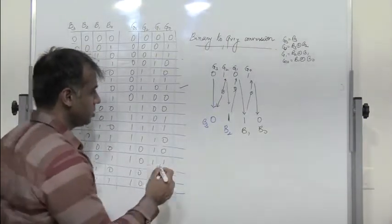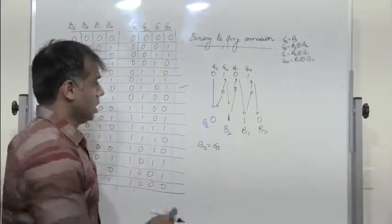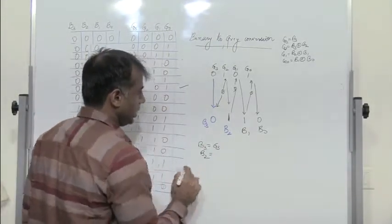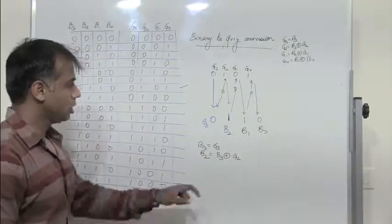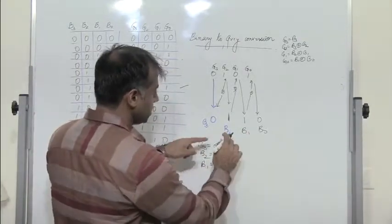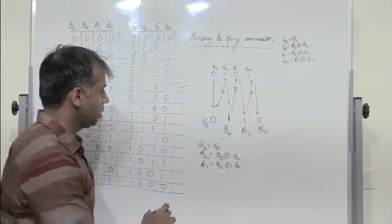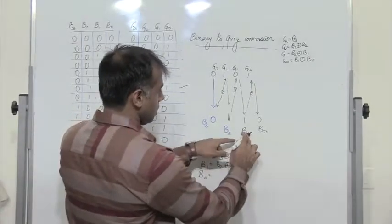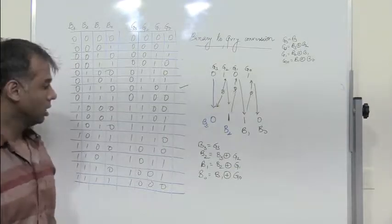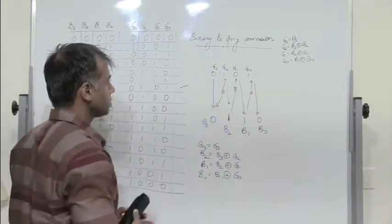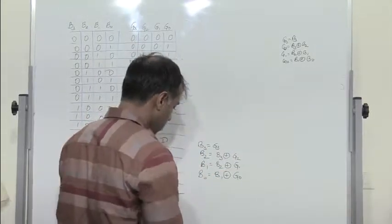So let me repeat. What is B3? B3 is nothing but G3 — the MSB bit remains the same. What is B2? The next bit is B3 XOR with G2. What is B1? B1 is B2 XOR with G1. And what is B0? B0 is B1 XOR with G0. So let's take another example of gray to binary conversion.